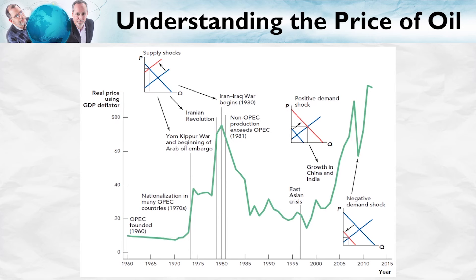A higher price, however, encouraged more exploration. As additional sources of oil were discovered in the North Sea and in Mexico, the price of oil began to fall. Another key event occurred in the 2000s as growth in China and India increased, which increased the demand for oil, pushing up the price. For the first time, millions of people were able to afford a car, and that increased the demand for oil. That increased demand continued until the big drop in the price of oil in 2008-2009 — the demand shock from the big recession and the financial crisis, which hit the United States and Europe especially hard, reducing the demand for oil.